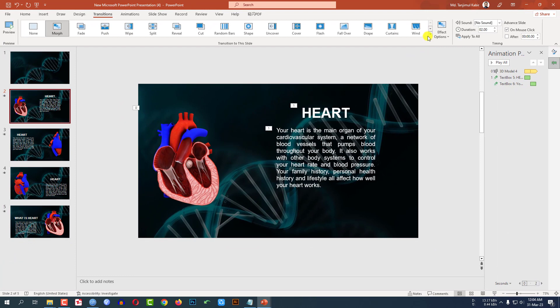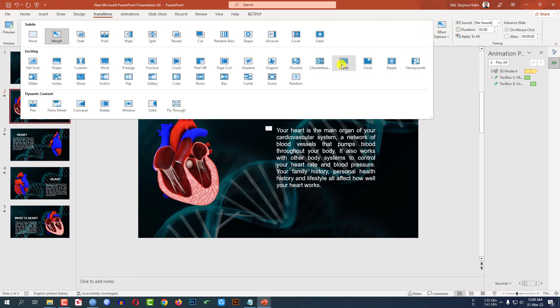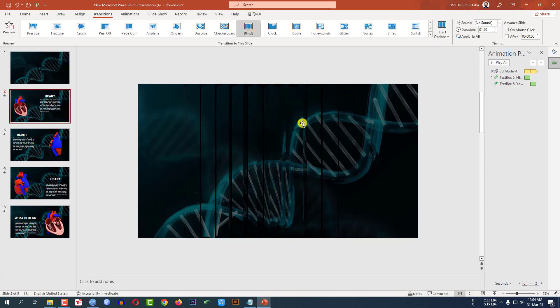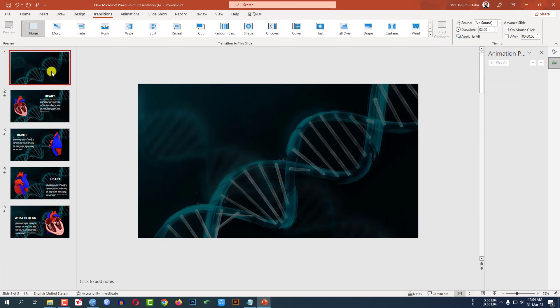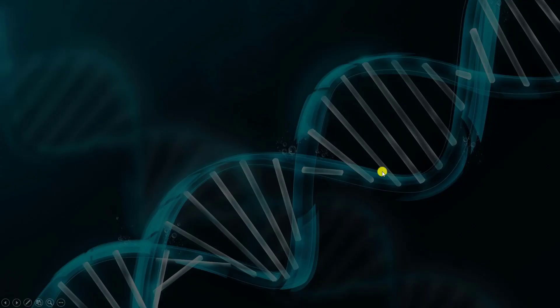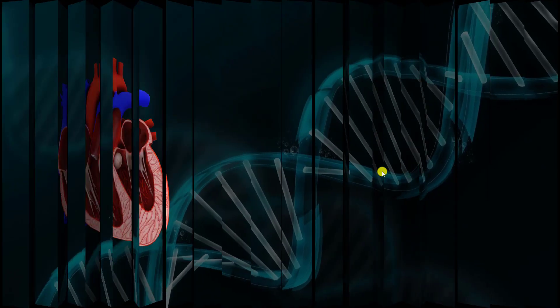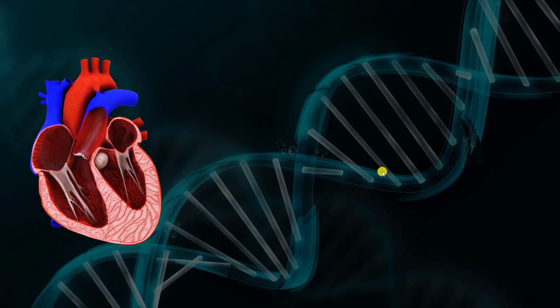Now select this last slide, click on Transition, and click on Blinds. Now let me go to the first slide, click on Slideshow, and press the Space button to preview. This is perfect.